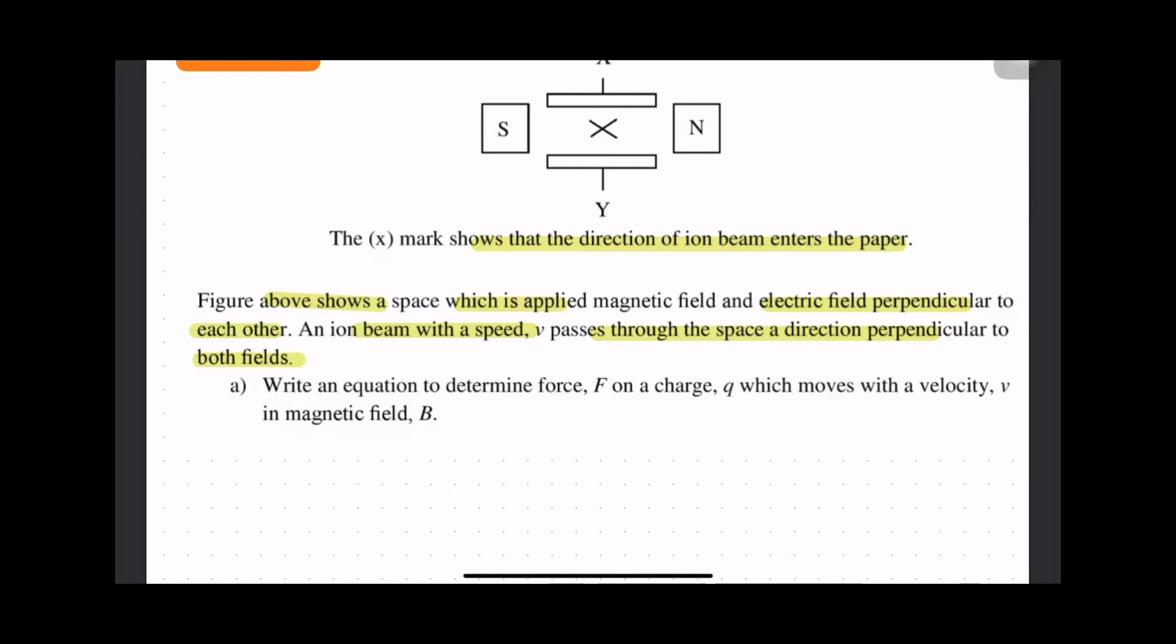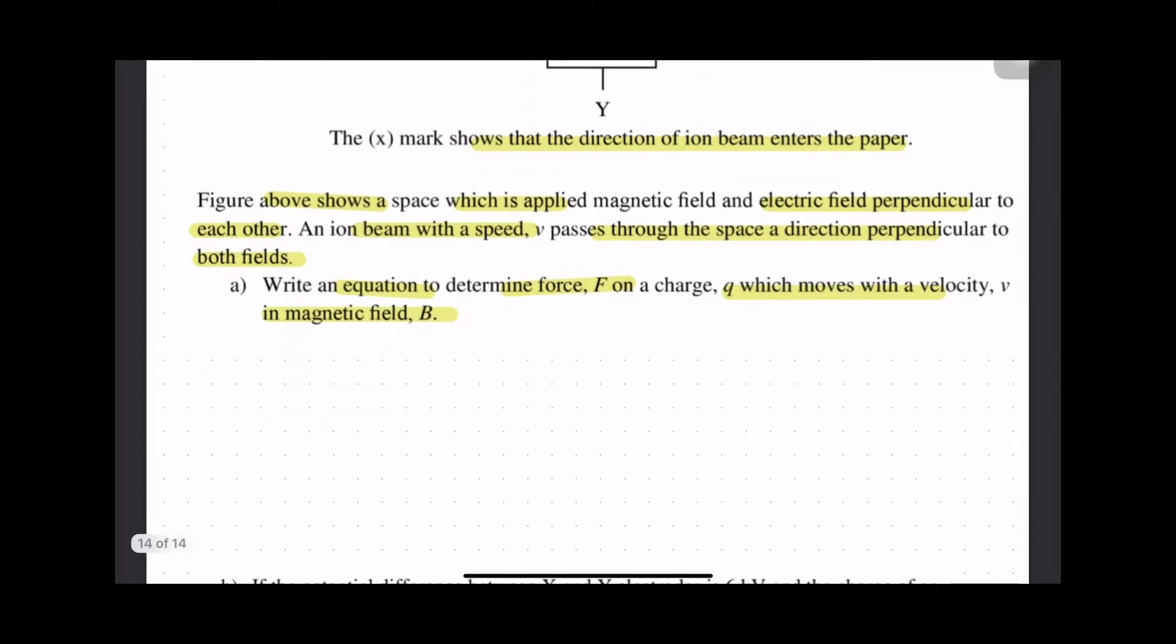Maksudnya dia akan bergerak lurus. Write an equation to determine the force on the charge q which moves with velocity v in magnetic field B. So the equation relating charge, moving velocity is FB = qvB sin θ.